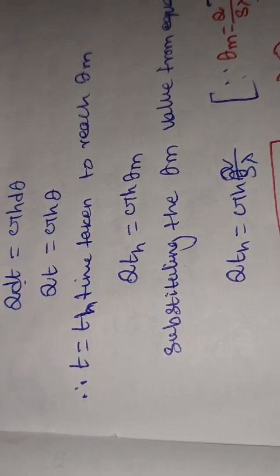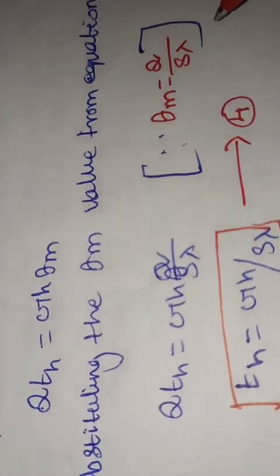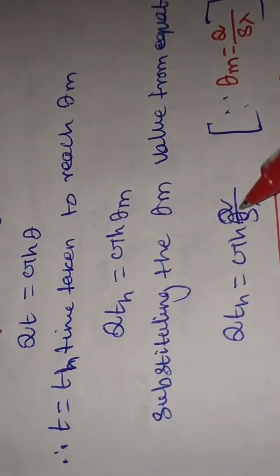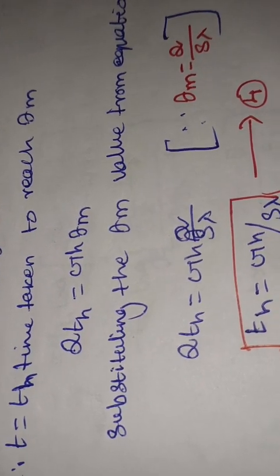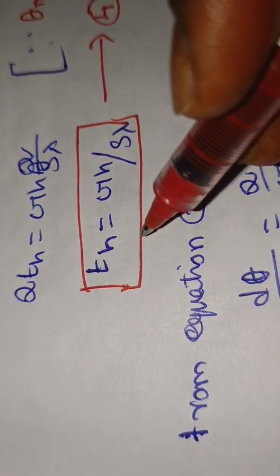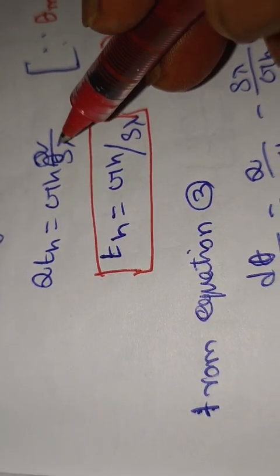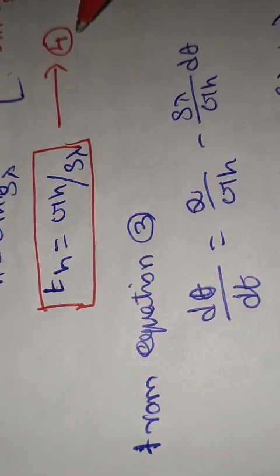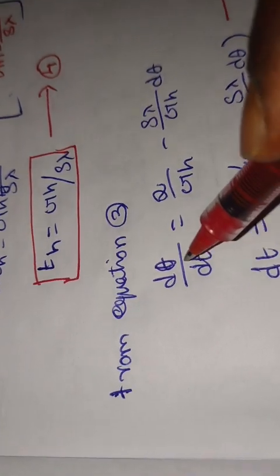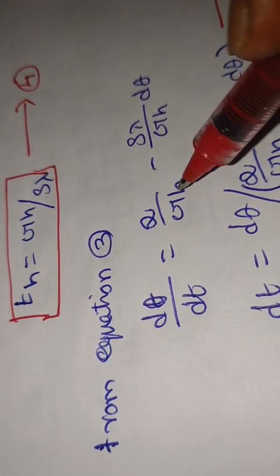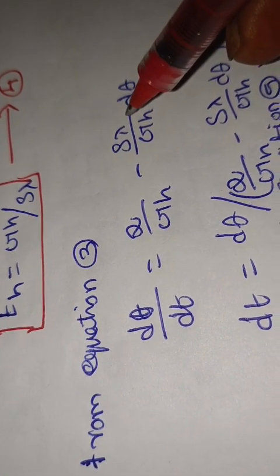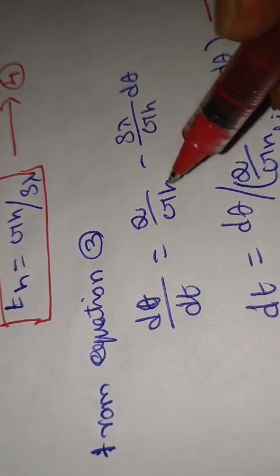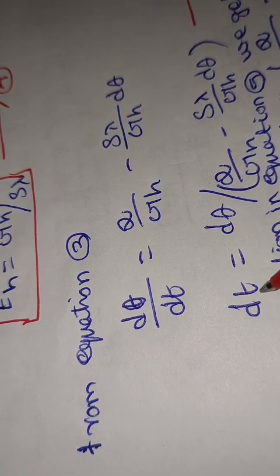Substituting theta_m from equation two into the expression Q·T_H = G·H·theta_m, and replacing theta_m = Q/(S·λ), the Q cancels on both sides, giving: T_H = G·H / (S·λ). This is equation four. From equation three, dθ/dt = Q/(G·H) − (S·λ)/(G·H)·θ.